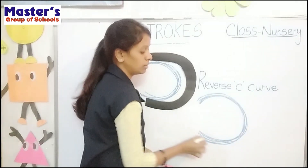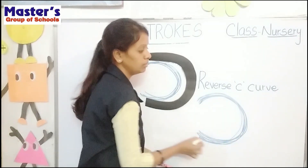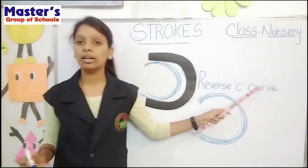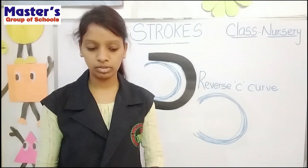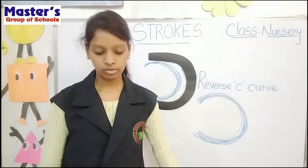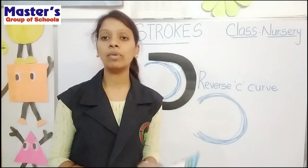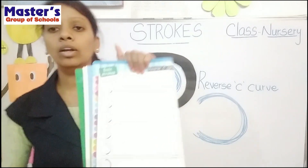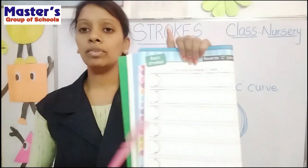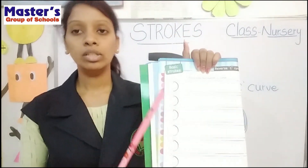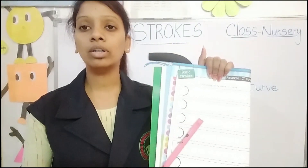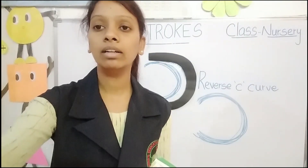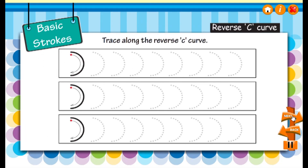Reverse C curve. Now take out page number 1010. Look here — in your books, reverse C curve is there, no? So you have to trace neatly in your books. Okay children, trace along the reverse C curve.